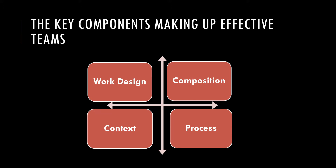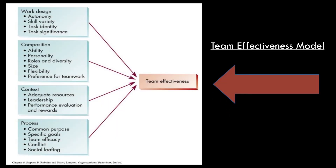Now let's see what is a model of creating an effective team. This model has four key components and it contributes towards creating an effective team. Team effectiveness in this model includes the objective measure of team productivity, managers' rating of team performance, and aggregate measure of member satisfaction. We will look at all four key components — work design, composition, context, and processes — and what this model actually intends to do to create an effective team.